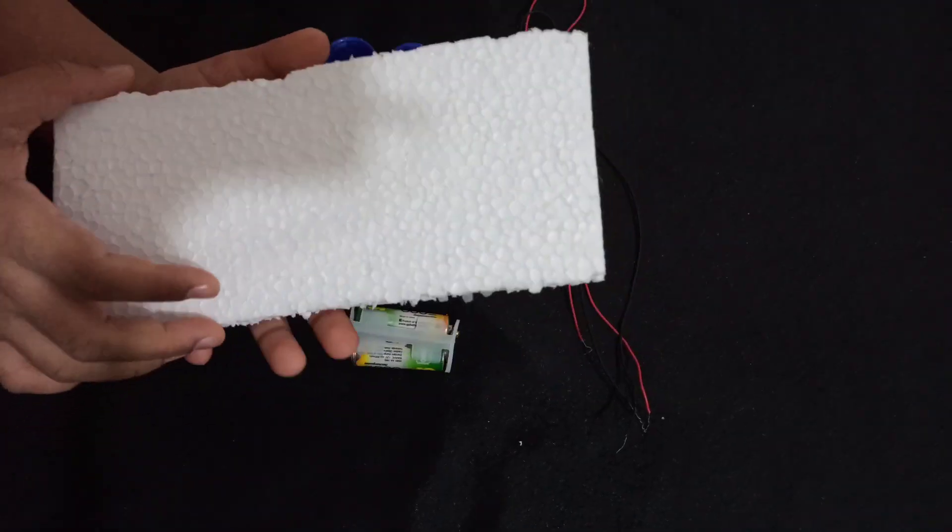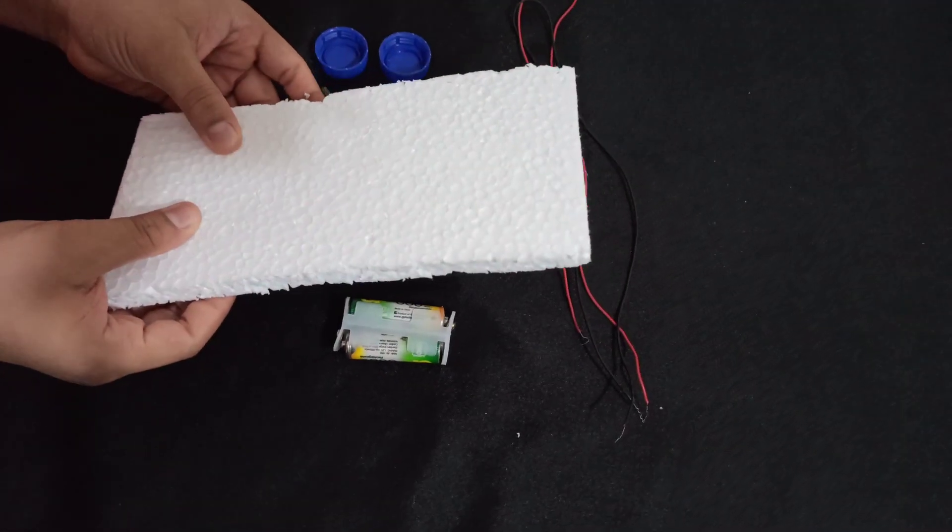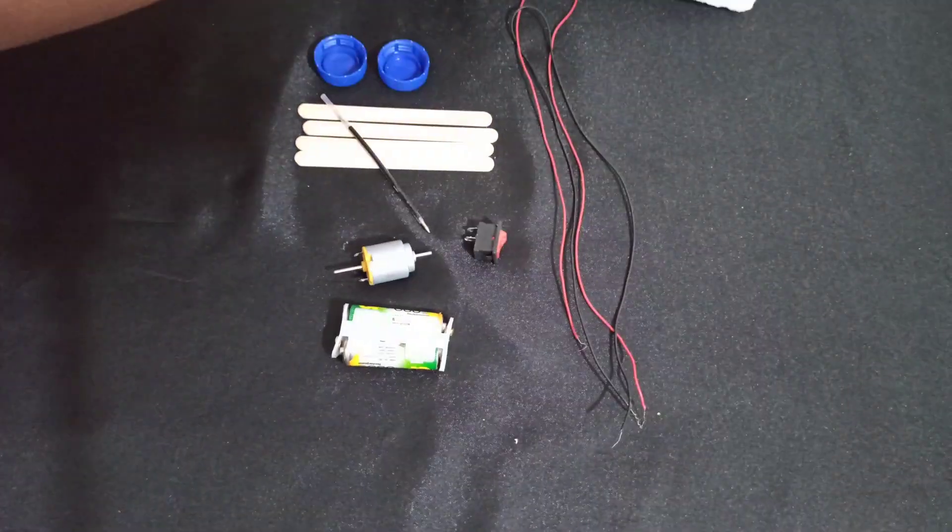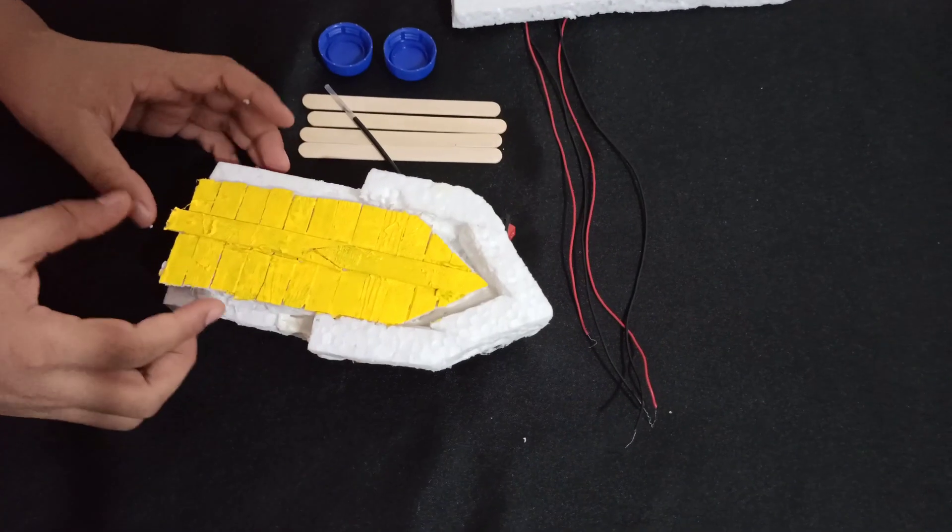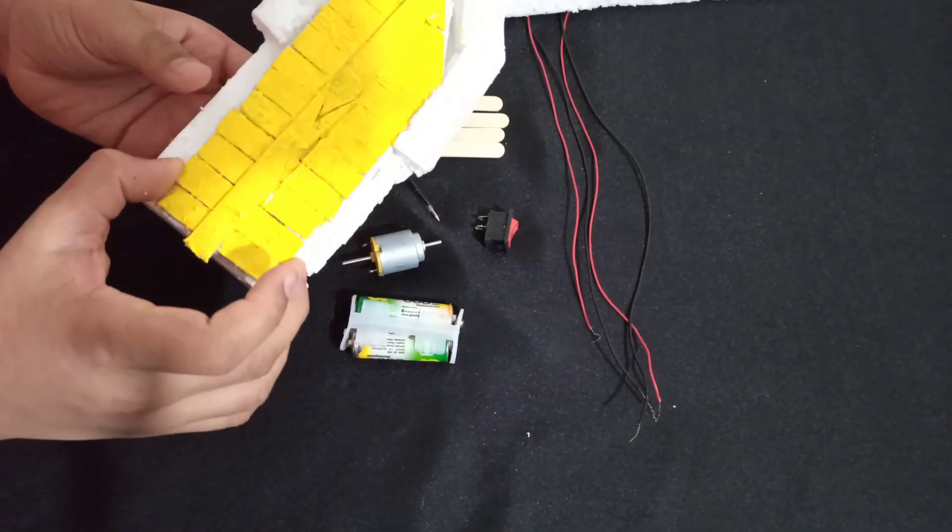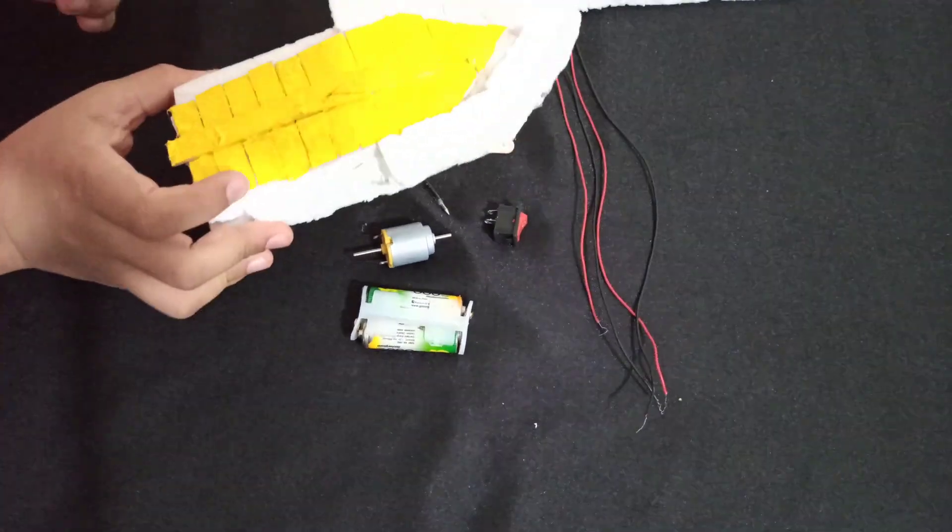First, take your styrofoam piece and cut it into a boat shape. Then it should look like this. I have put some ice cream sticks and color so that it looks attractive.